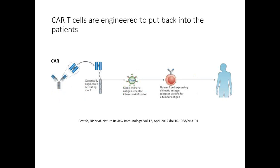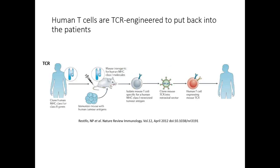The second example is using CAR T. You would genetically engineer the antigen receptor, then use electroporation to express the receptor onto the human T cells, then put them back into the patient. Finally, the third approach involves immunizing mice with tumor antigen, then isolating T cell-specific MHC class I restricted tumor antigens, cloning them, and engineering them onto human T cells to express the TCR, then putting them back into the patient.